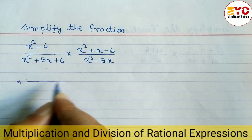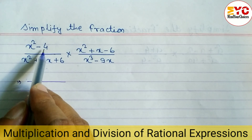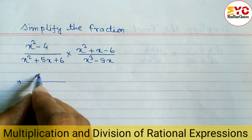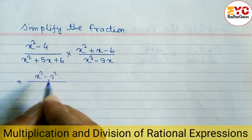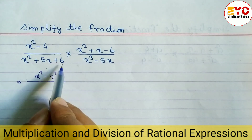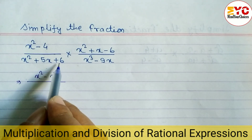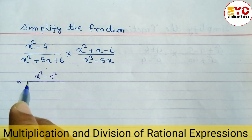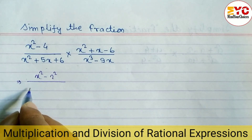First of all, x squared minus 4 — we can convert this since the square root of 4 is 2, so we can write x squared minus 2 squared. Similarly, we have to factorize x squared plus 5x plus 6 by finding factors whose multiplication is 6 and addition is 5. The factors are 3 and 2.